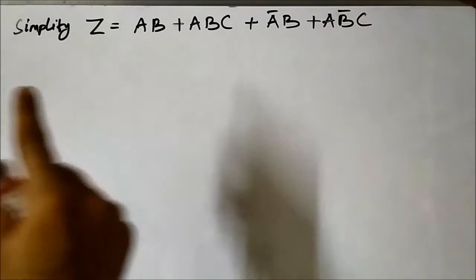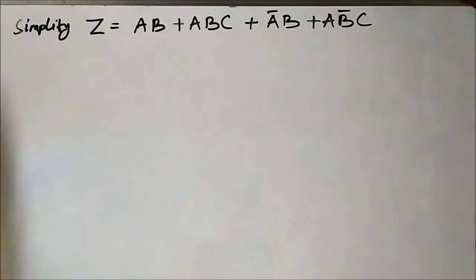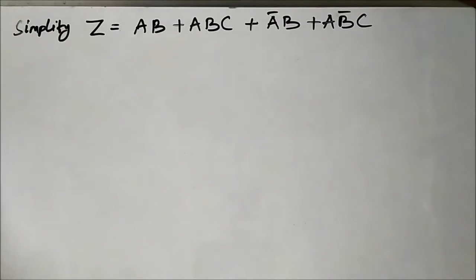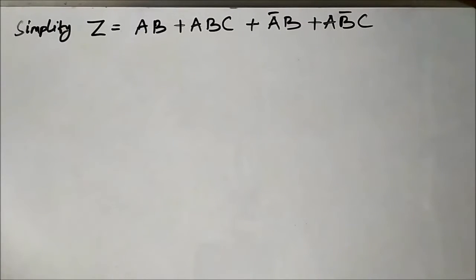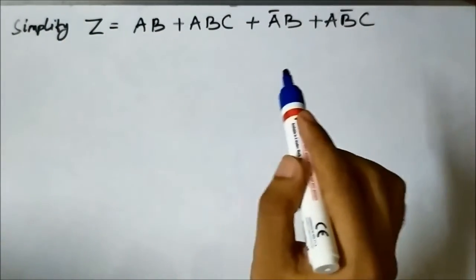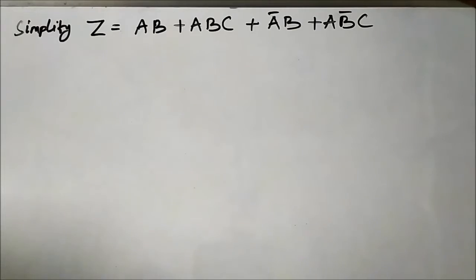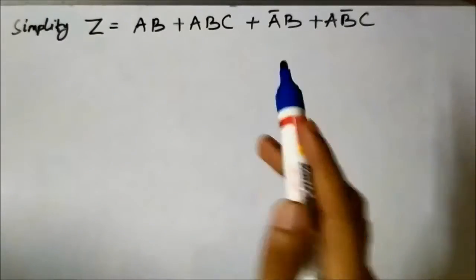Hello friends, here we are with another question related to simplification of boolean expressions. So far we have discussed around five or six questions, so this is another question. The expression is ab + abc + āb + ab̄c. The first step in any simplification question is to identify common terms.